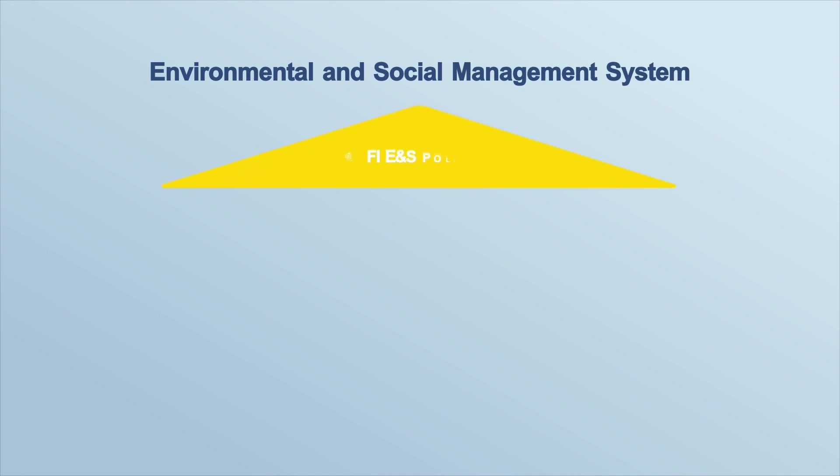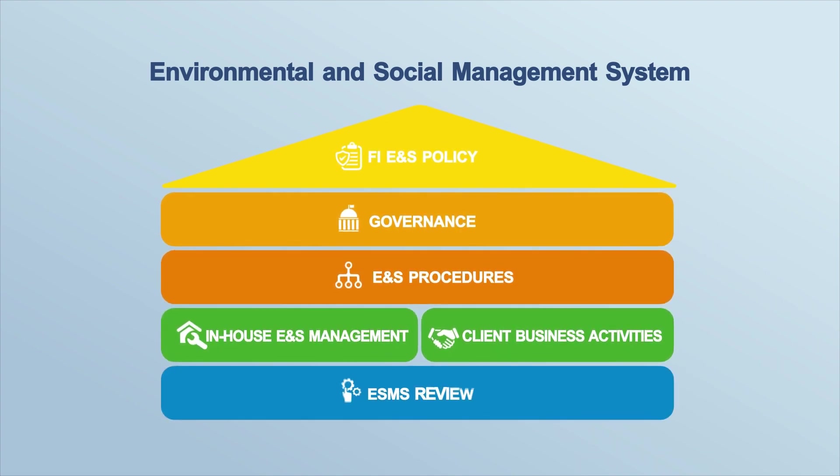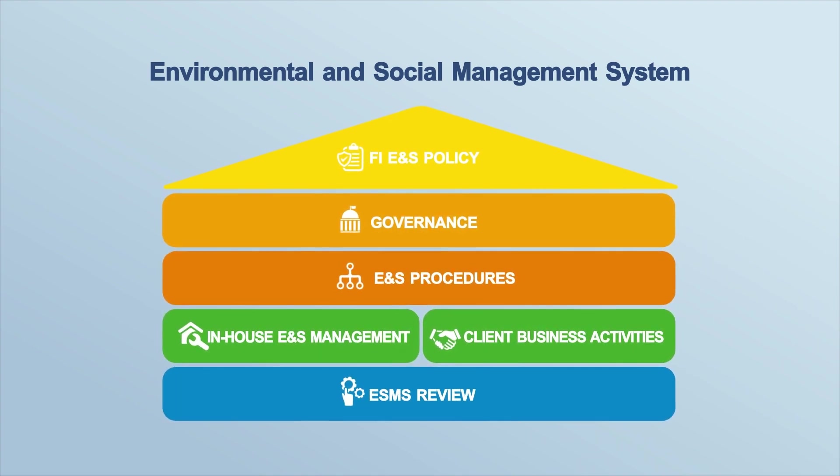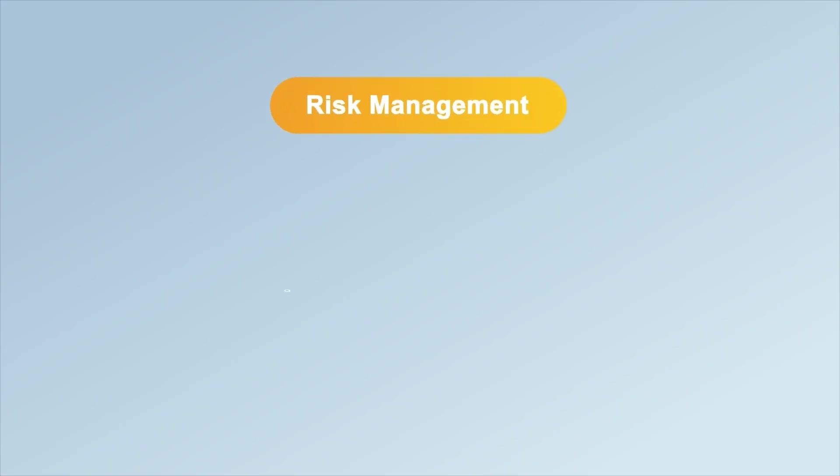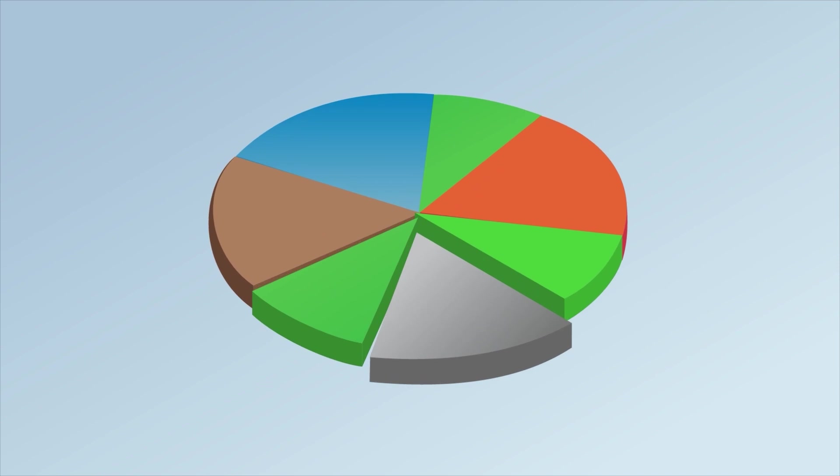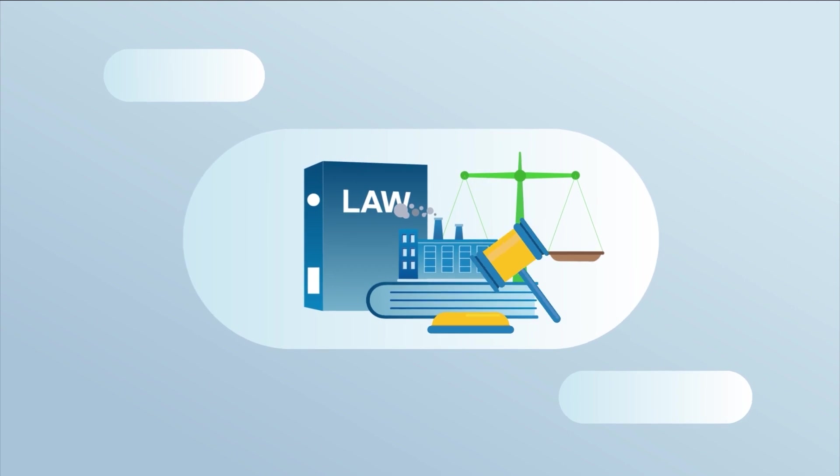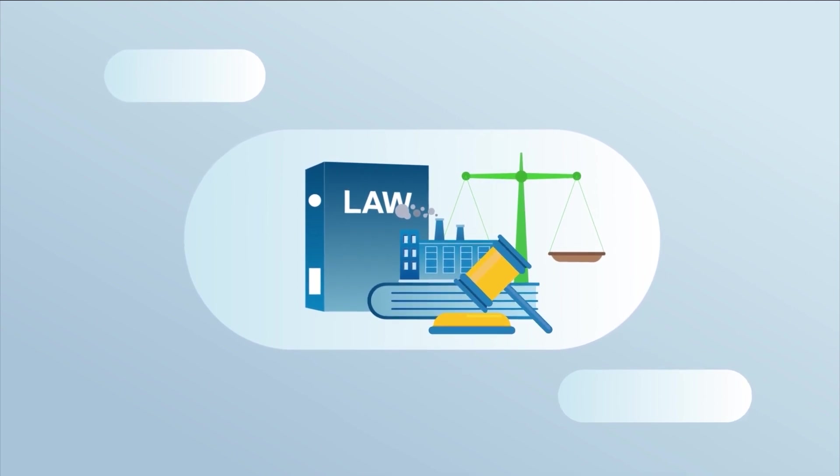An ESMS allows the financial institution to integrate environmental and social, or E&S, considerations and objectives into its core business activities. It can help the financial institution understand, manage, and reduce E&S risks associated with its clients' activities, as well as with its overall portfolio. The ESMS can also help the institution ensure that it complies with all relevant E&S laws, international E&S standards, and commitments.